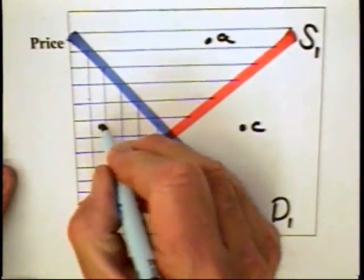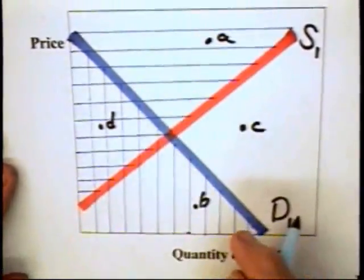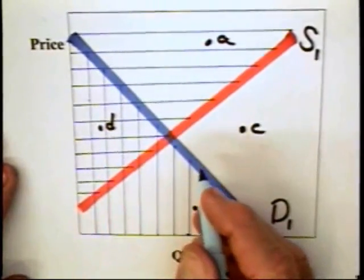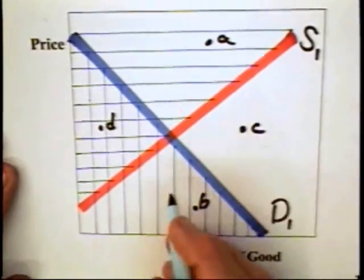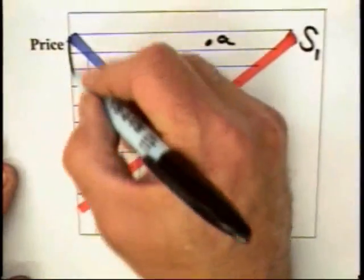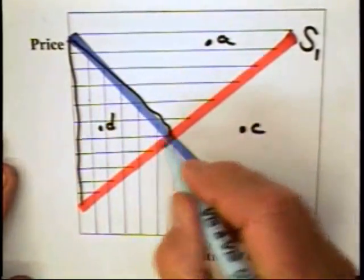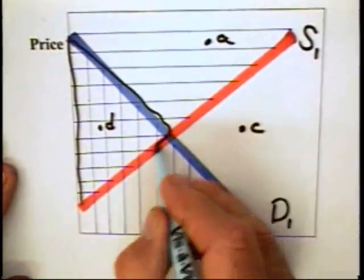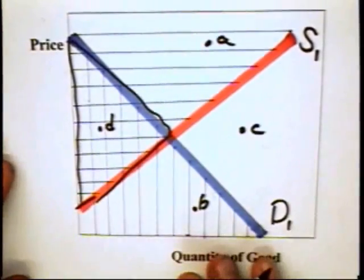Combination D is acceptable to both consumers and producers. Indeed, any price-quantity combination that's in this area is acceptable to both consumers and producers.